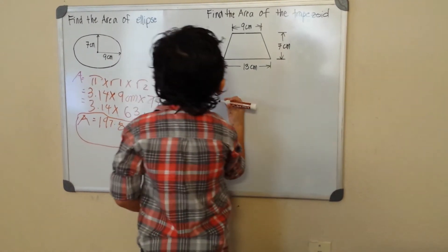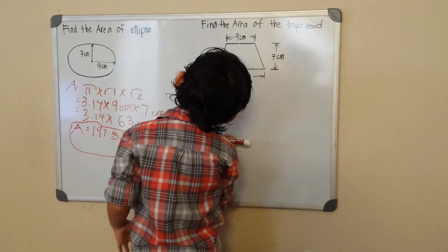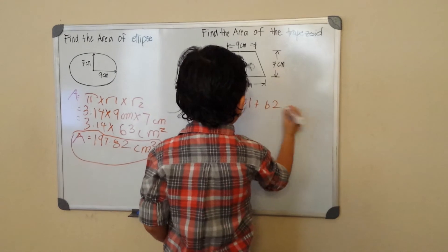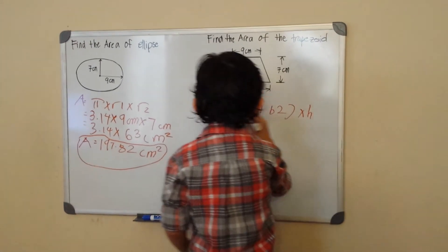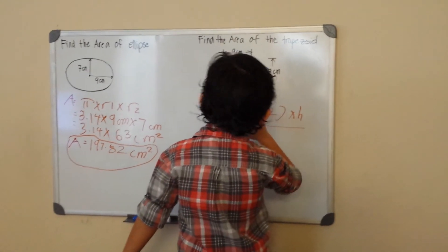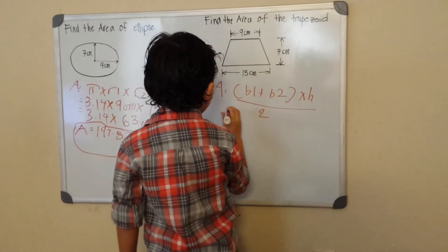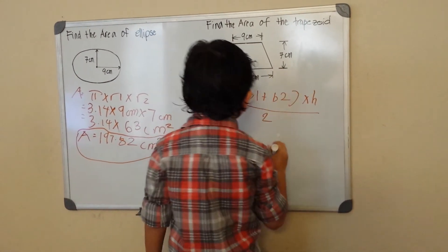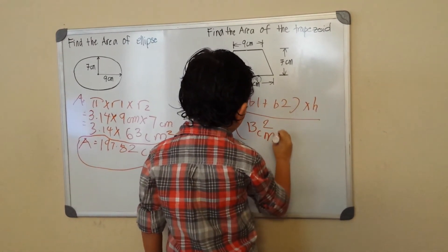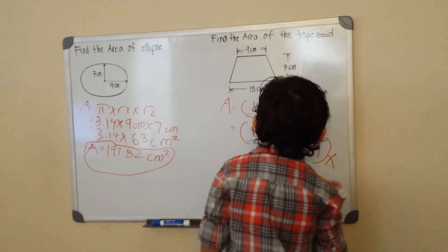Okay, now I'm going to do the trapezoid next. My area formula for that would be B1 plus B2 times height, divided by 2. This is the height, this is our B1, and this is our B2. So B1 is 13cm, B2 is 9cm, and the height is 7cm.